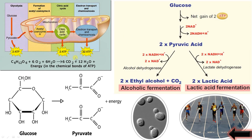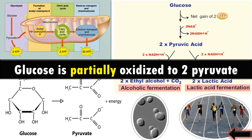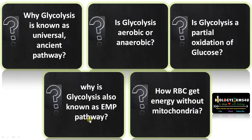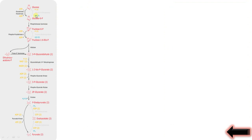In aerobic conditions, pyruvate enters the mitochondria and approximately 30 more ATP is synthesized. Only two ATP is synthesized in glycolysis; the majority of ATP is synthesized during aerobic cellular respiration. In complete oxidation, glucose is completely oxidized to carbon dioxide and water with the release of approximately 32 ATP molecules. So in glycolysis, glucose is only partially oxidized to two pyruvate molecules, which can be further oxidized to release more energy.